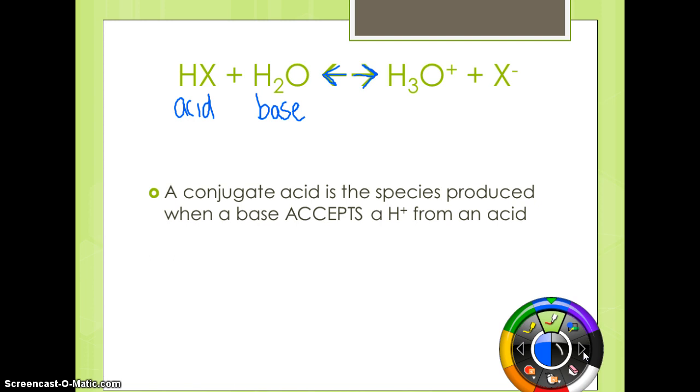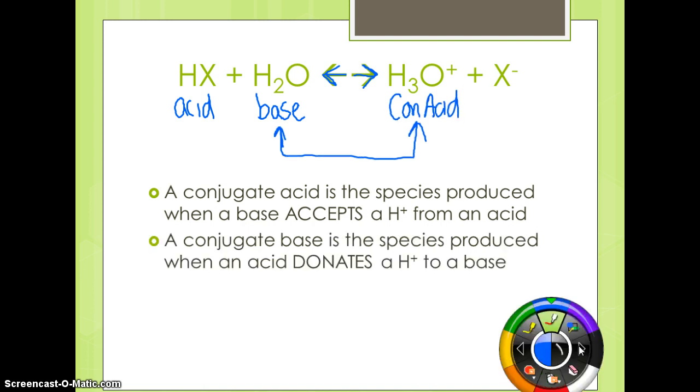A conjugate acid is a species produced when a base accepts a proton from an acid. So we said that water here was our base, and when it picks up a proton, it becomes H3O plus. So this is going to be our conjugate acid. And a conjugate base is a species that is produced when an acid donates a proton to a base. So if this is our acid, it's going to lose that proton, become just an ion, and be the conjugate base.